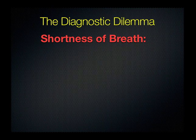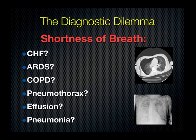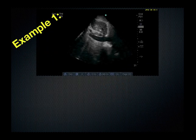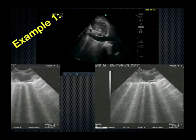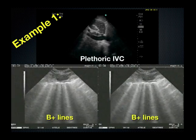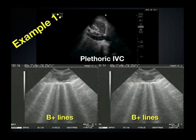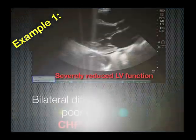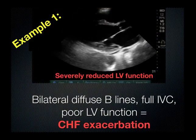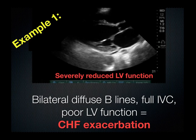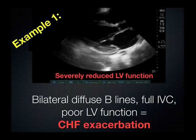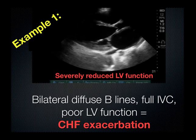Here is a diagnostic dilemma: shortness of breath — CHF, ARDS, COPD, or any number of things? In order to get a jump start on appropriate therapy, use your ultrasound. Example number one: a patient is acutely short of breath, and you find an IVC that is plethoric with no significant respiratory variation, bilateral B lines, and with the cardiac window you can appreciate severely reduced left ventricular function. The combination of bilateral diffuse B lines, a full inferior vena cava, and poor LV function leads you to the diagnosis of a CHF exacerbation as the cause for that patient's respiratory distress.